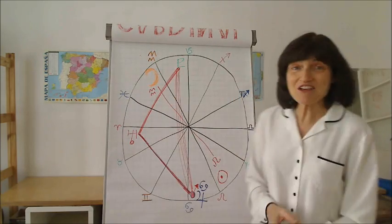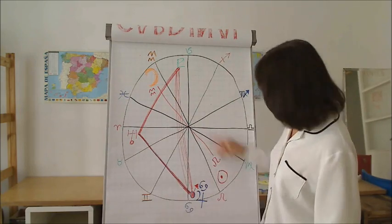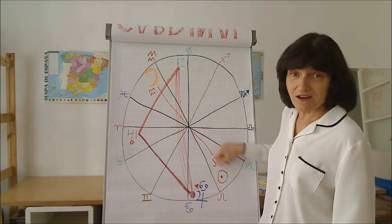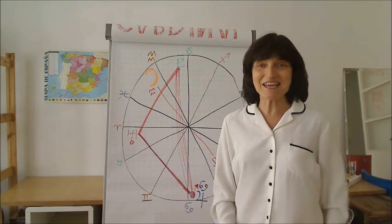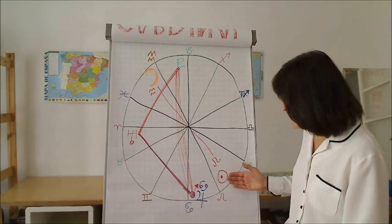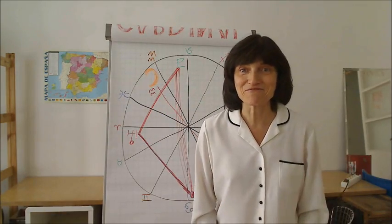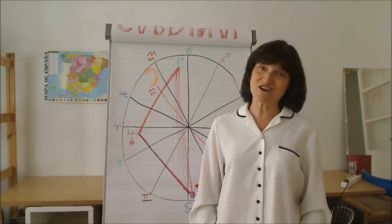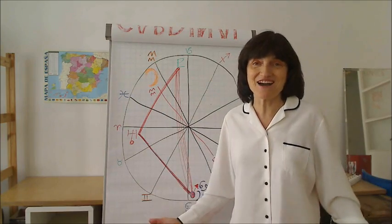And then we've got this sun just in Leo. It's at zero degrees, this full moon, so it's new beginnings. How can I be more creative? What's my unique contribution? What am I about? Where do I shine?